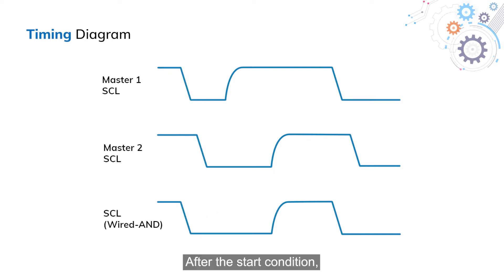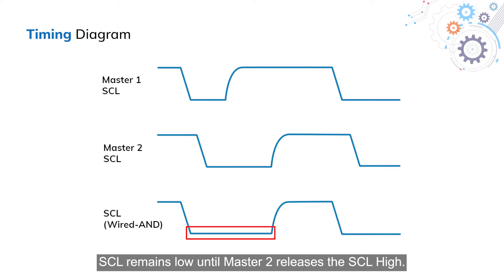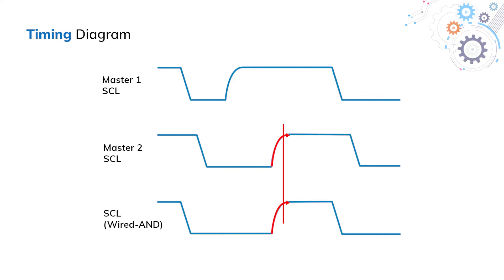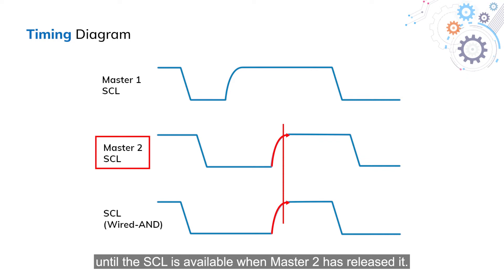After the start condition, master 1 releases SCL to go high. However, master 2 is still holding SCL low. Because of the wired-AND connection, SCL remains low until master 2 releases the SCL high. At the same time, master 1 is still monitoring SCL and must wait for the other master to release the clock. Master 1 cannot advance the SCL pulse until the SCL is available when master 2 has released it.